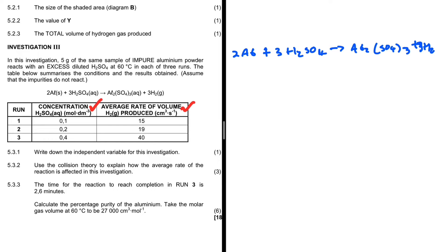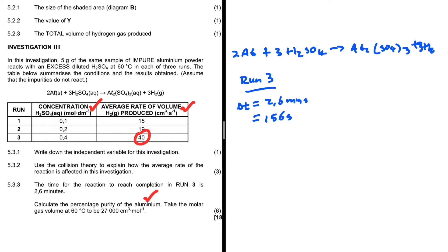The main aim is to calculate the percentage purity of the aluminium. The information we have for Run 3: the time for the reaction to reach completion is 2.6 minutes. We don't want minutes, so let's convert: 2.6 × 60 = 156 seconds. That's our change in time.